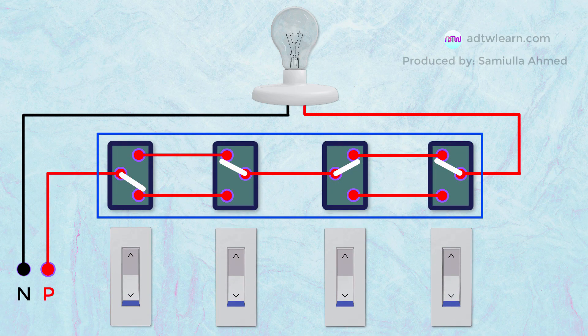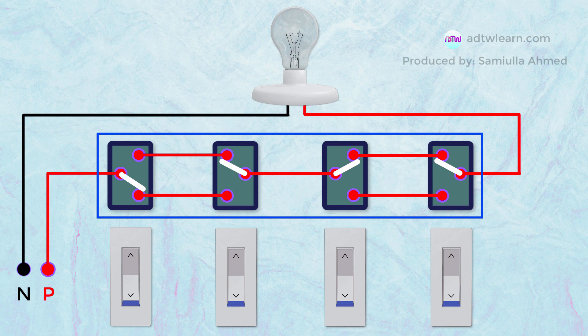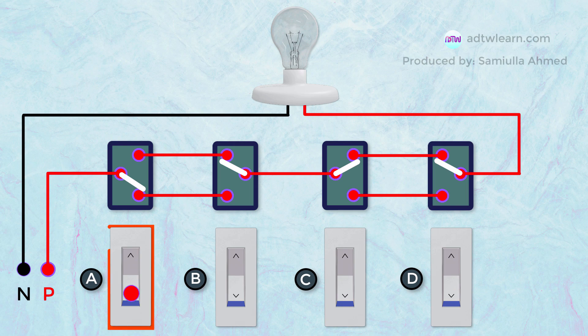These switches will help in understanding the inside working and flow of current to the bulb. When we turn on switch A, the current starts flowing to the bulb. As you can see the flow of the current to the bulb.